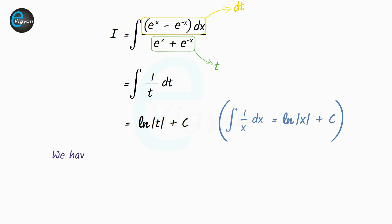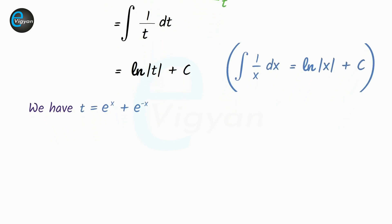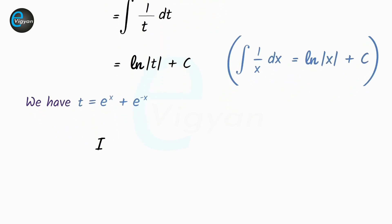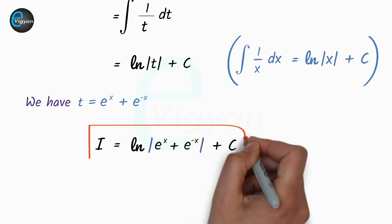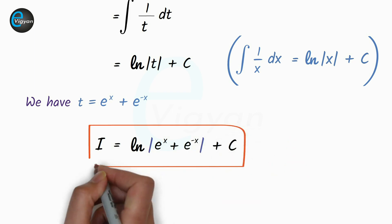The formula used is integration of 1 upon x dx equal to ln of mod x plus c. Now we have t equal to e raised to the power x plus e raised to the power minus x. So finally, the integral i is evaluated as i equal to ln of mod e raised to the power x plus e raised to the power minus x plus c. And this is the final answer of this question.